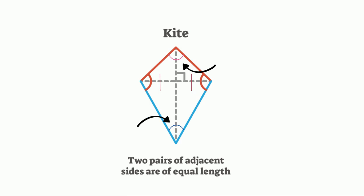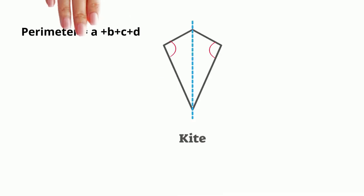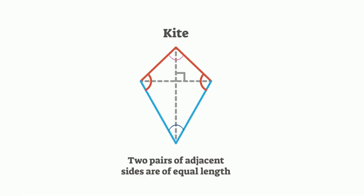The formula for finding the perimeter is side A plus B plus C plus D. And a formula for finding the area is you can take one half diagonal one times diagonal two.